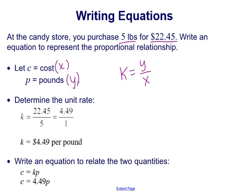So the constant of proportionality, k, is equal to 4.49 or $4.49 per one pound. Now we can take our y equals kx equation, relate it with the variables c and p. So c equals kp. If we substitute in 4.49 for k, we're going to get the equation that relates the two quantities as c equals 4.49p.